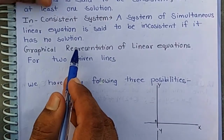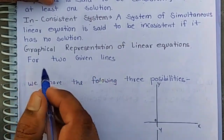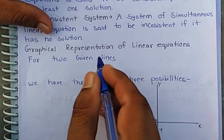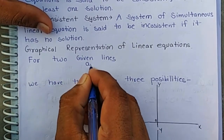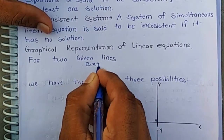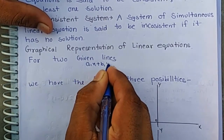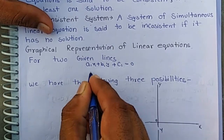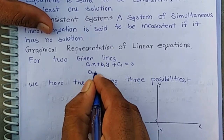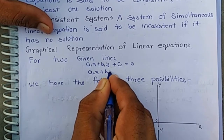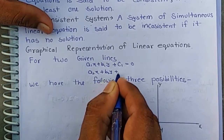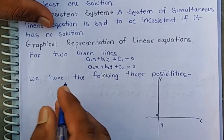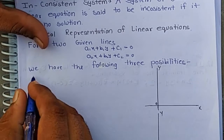Now, the graphical representation of linear equations. For two given lines — a1x plus b1y plus c1 equals 0, and a2x plus b2y plus c2 equals 0 — we have the following three possibilities.